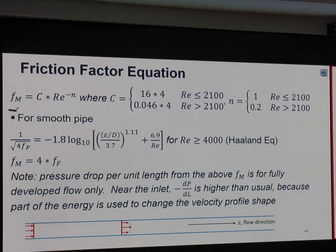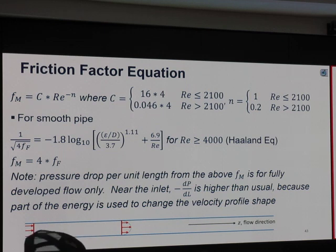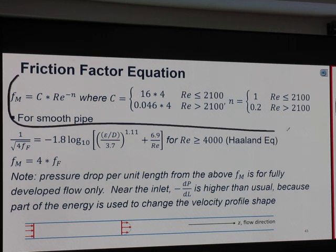Friction factor. Multiplication factor is constant multiplied by Reynolds number to the power of n. n is 1 for laminar flow. n is 0.2 for turbulent flow. And the constant C is 16 multiplied by 4 or 64 for laminar flow and that much for turbulent flow. So this will be easy way to calculate it. By the way, this is for smooth pipe.